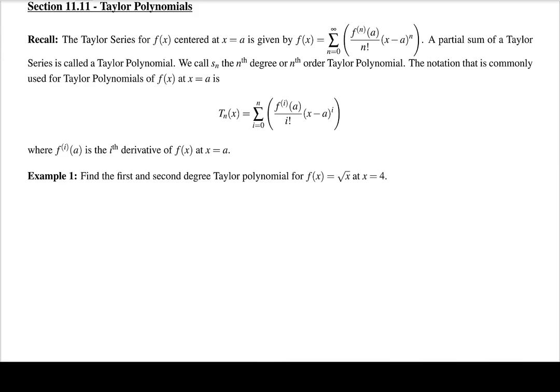Taylor polynomials are basically just a portion of our Taylor series. If we think about our S sub n's — these are partial sums of a series — then S sub n is called the nth degree or nth order Taylor polynomial. The notation commonly used for a Taylor polynomial about x equals a is T sub n of x, and it equals the sum from i equals 0 to n of the standard Taylor series terms with i replacing n.